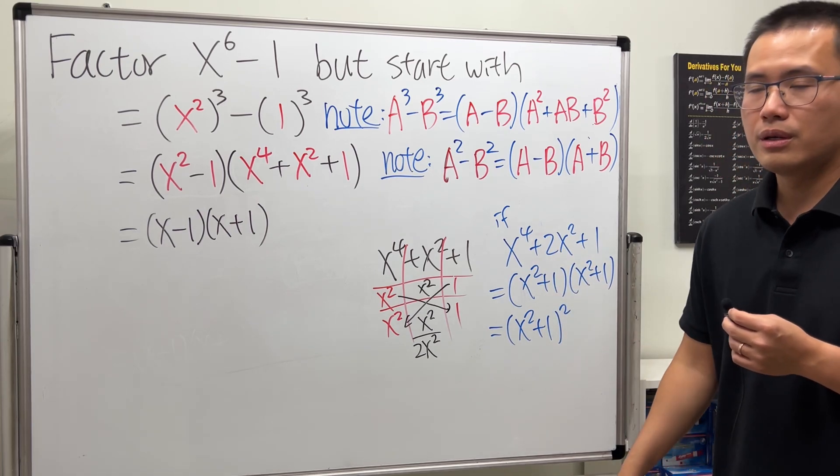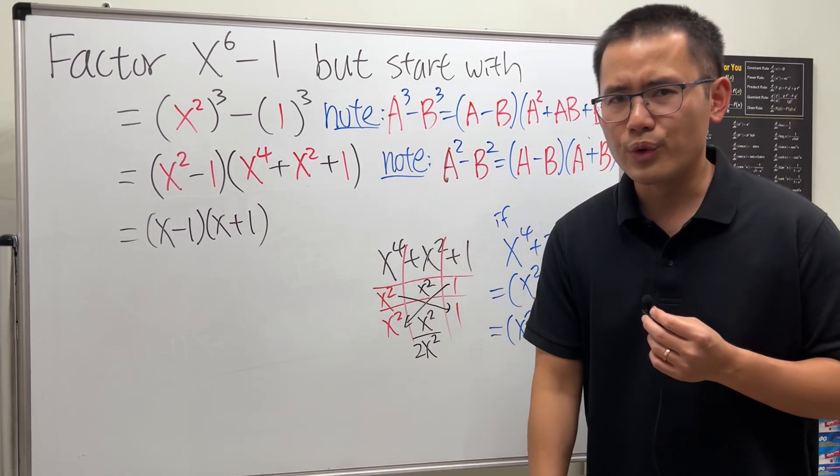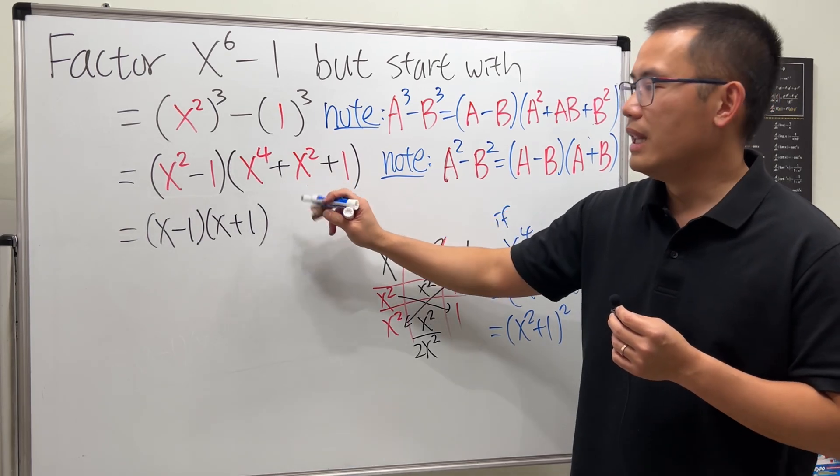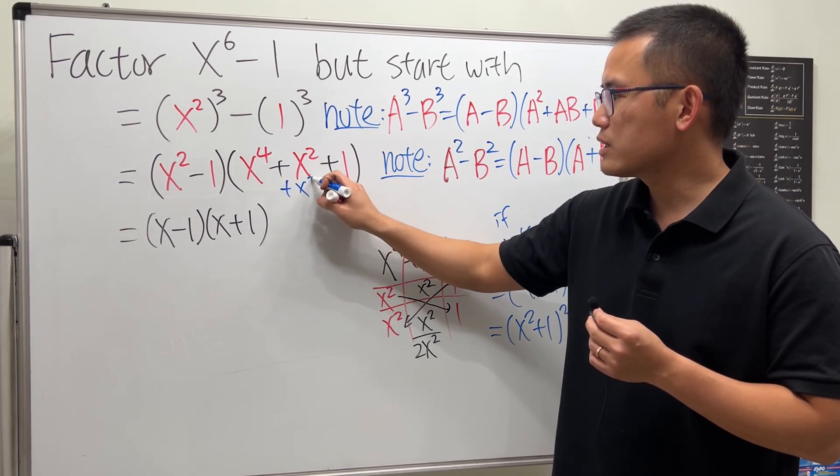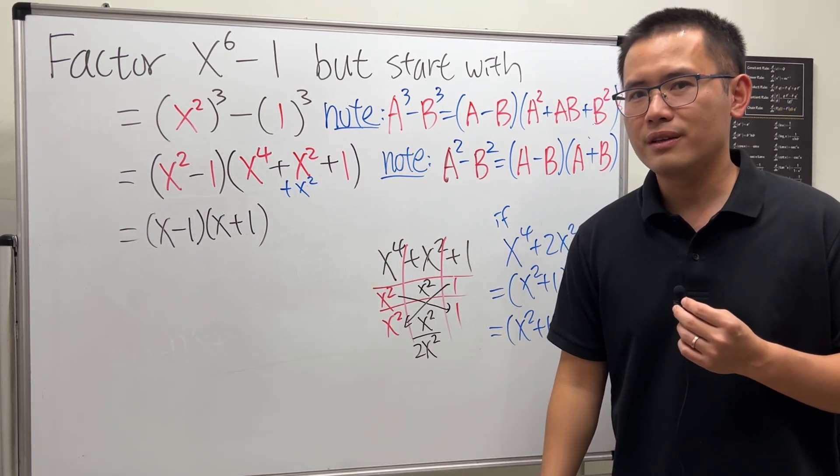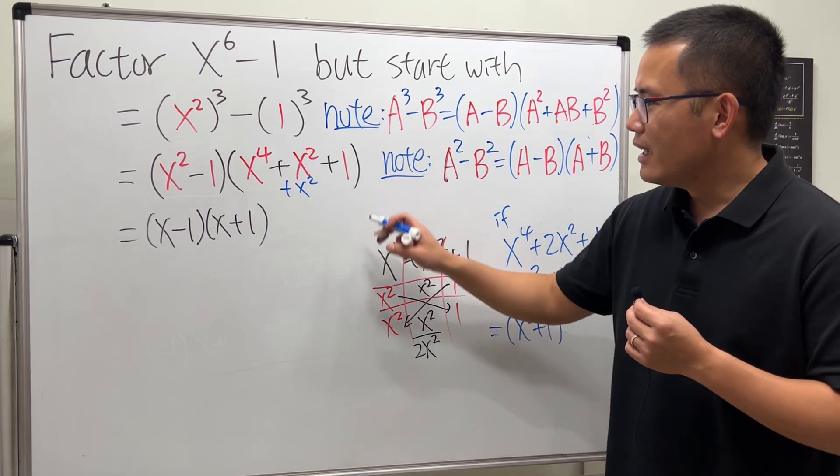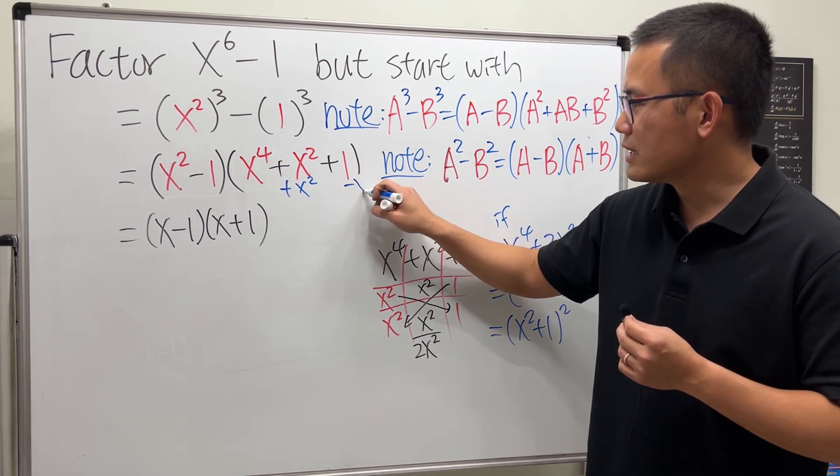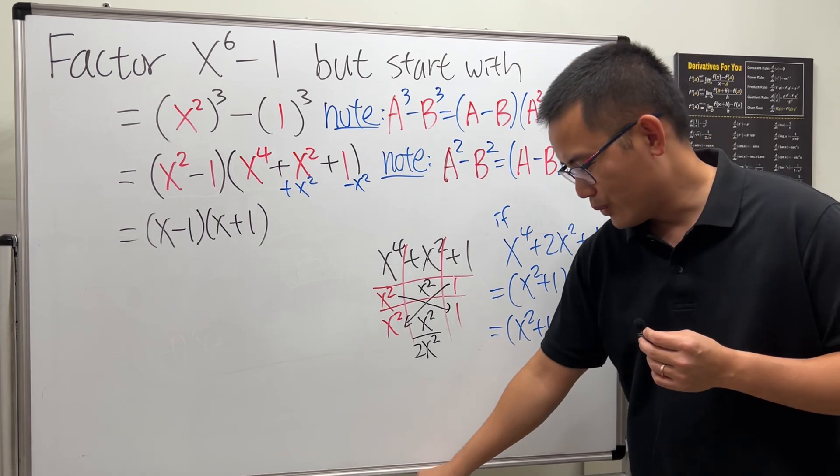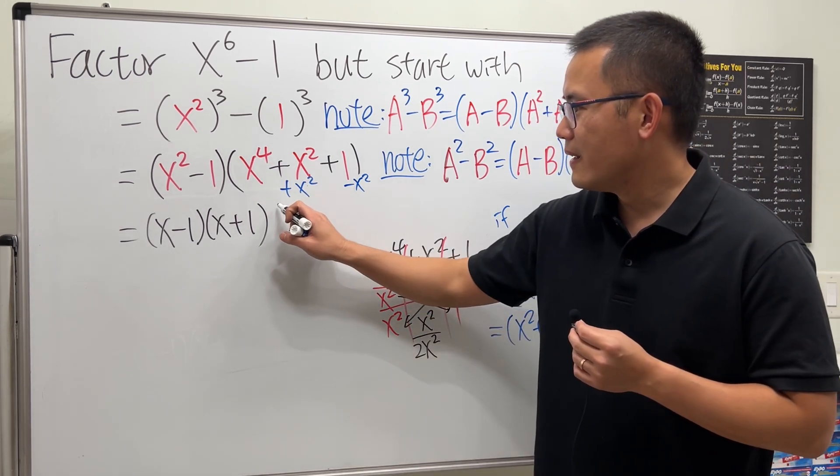But that's when we have a 2 right here, this is just a 1. But don't worry, if we need another x², let's just go ahead and add another x². But that changes the whole thing. Don't worry, at the very end right here just make sure we subtract that. Now we are talking business.